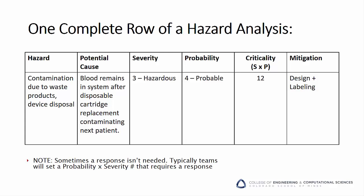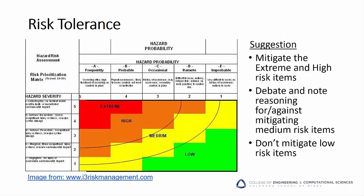Your actual hazard analysis will have many rows, and the question comes up: do I need to mitigate every identified hazard? The answer is no. Sometimes a response isn't needed. Typically, companies or teams will set a criticality number above which a response is required. The table shown is similar to those used by many companies for setting acceptable product risk. Typical companies stipulate that extreme or high risk items must be either addressed or receive explicit approval from management if not addressed. Items below that are often left to engineering discretion. This varies widely from company to company and industry to industry. Consider using this suggestion: mitigate the extreme and high risk items, debate and note the reasoning for medium risk items, and don't worry about mitigating most low risk items.